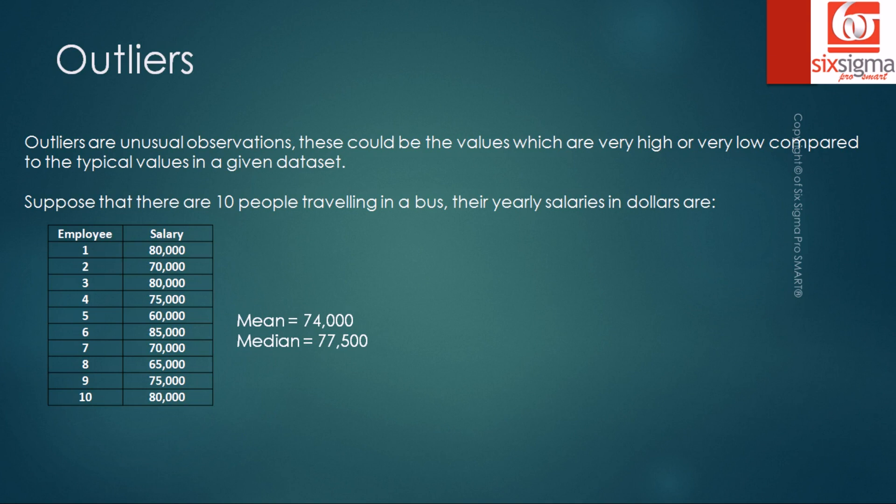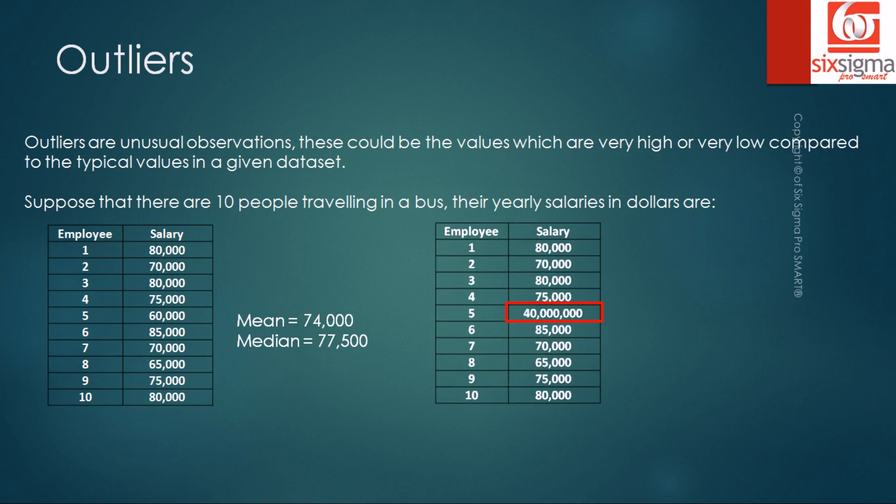Now assume that one of the employees who's there in the bus is replaced by the CEO of the company. The CEO of the company has a staggering salary of 40 million dollars. Now if we go about calculating the average and the median, this is what we get.